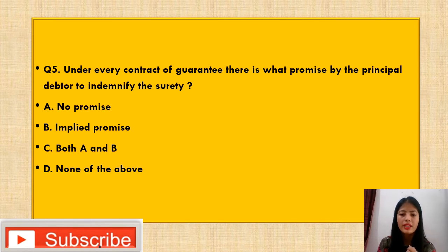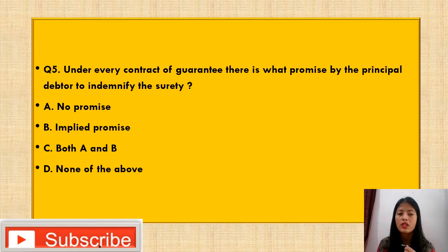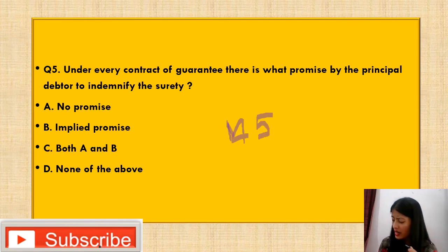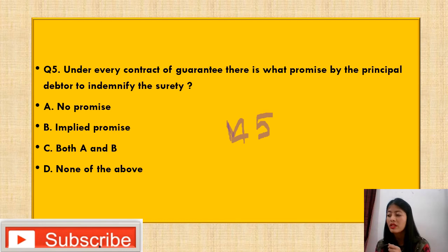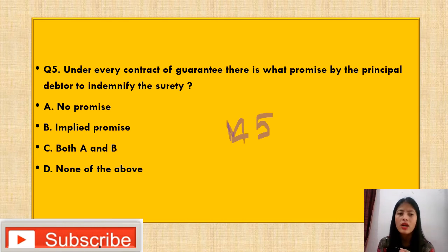Question 5: 'Under every contract of guarantee, there is what — a promise by the principal debtor to indemnify the surety?' Option (A) no promise, Option (B) implied promise, Option (C) both A and B, Option (D) none of the above. Refer to Section 145 of the Indian Contract Act — it says there is an implied promise by the principal debtor to indemnify the surety, and the surety is entitled to recover from the principal debtor whatever sum he has rightfully paid under the guarantee. So Option B is correct.